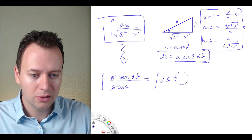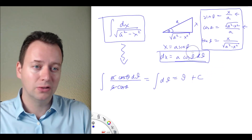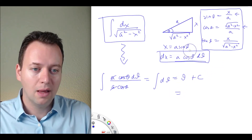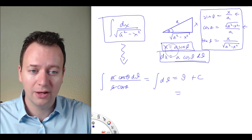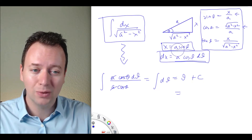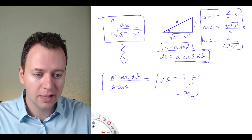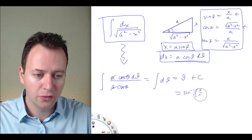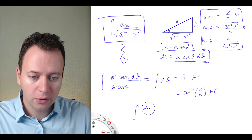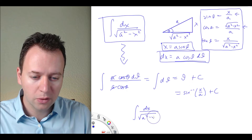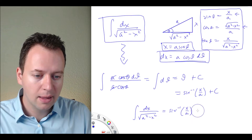We can integrate this — it's equal to theta plus c. Now we substitute back in. We have theta by itself, so we just use the relationship x equals a sine of theta. Therefore theta equals arcsin of x over a, plus c. All together, we get that the integral of dx over the square root of a squared minus x squared is equal to the arcsin of x over a plus c.